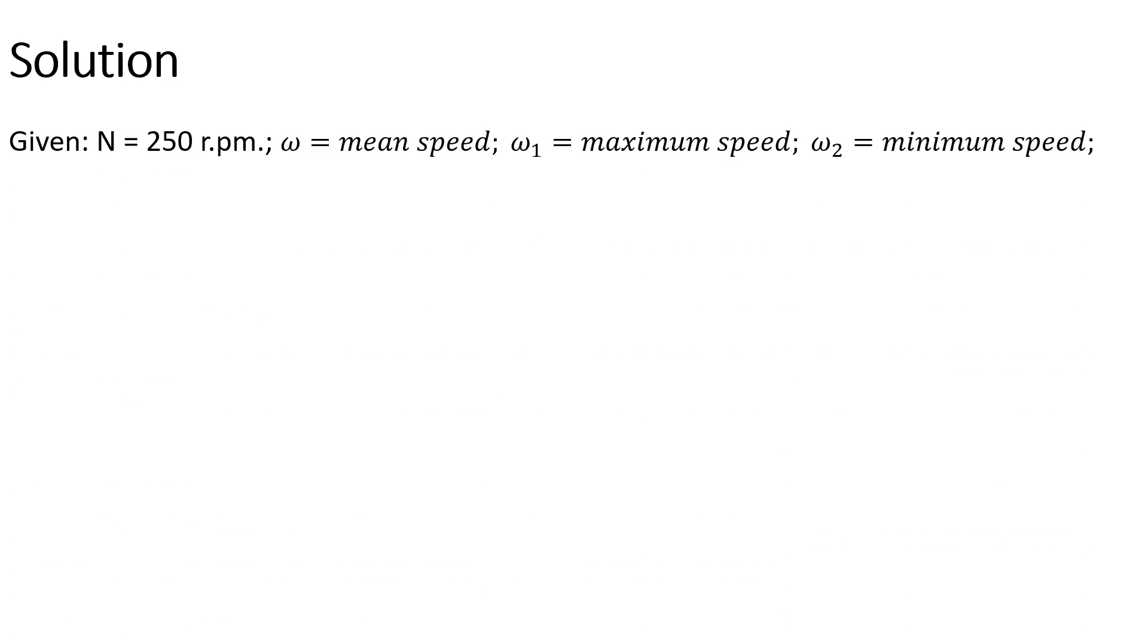For the solution, we are given the speed of the engine. Omega is the mean speed, omega 1 maximum speed, and omega 2 the minimum speed. From the explanation given, the difference between the maximum and minimum speed equals 0.01 omega. The coefficient of fluctuation of speed is given by equation 1, and we are able to calculate it and get a value of 0.01.